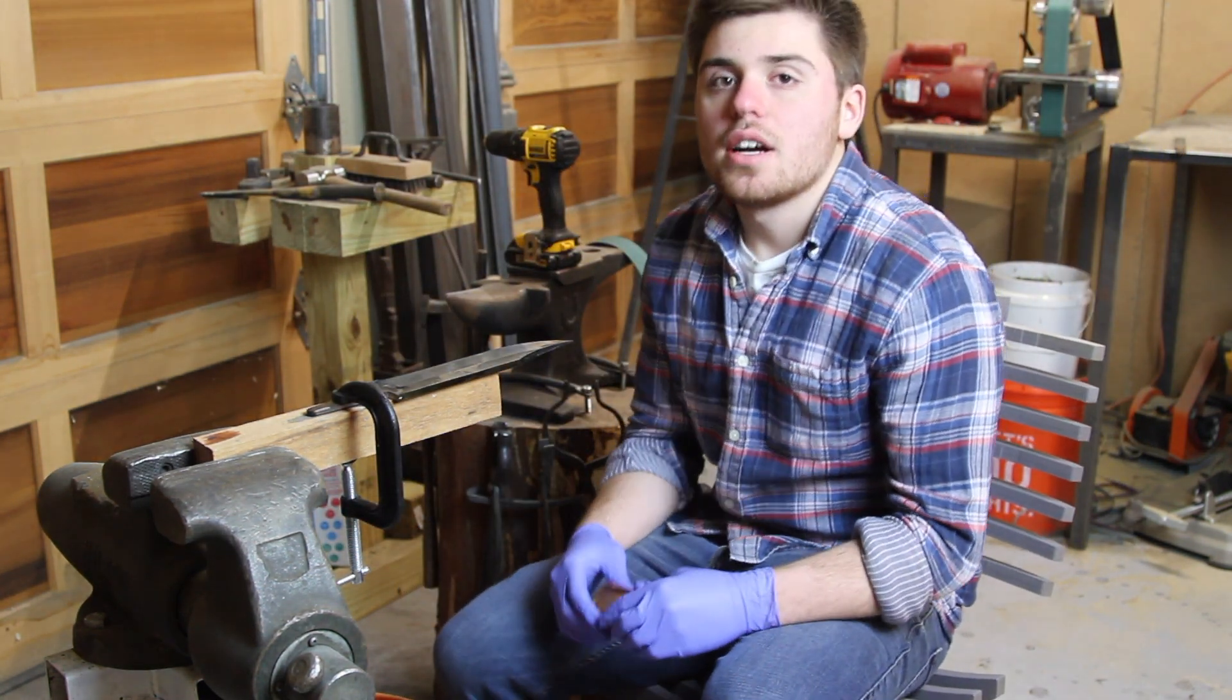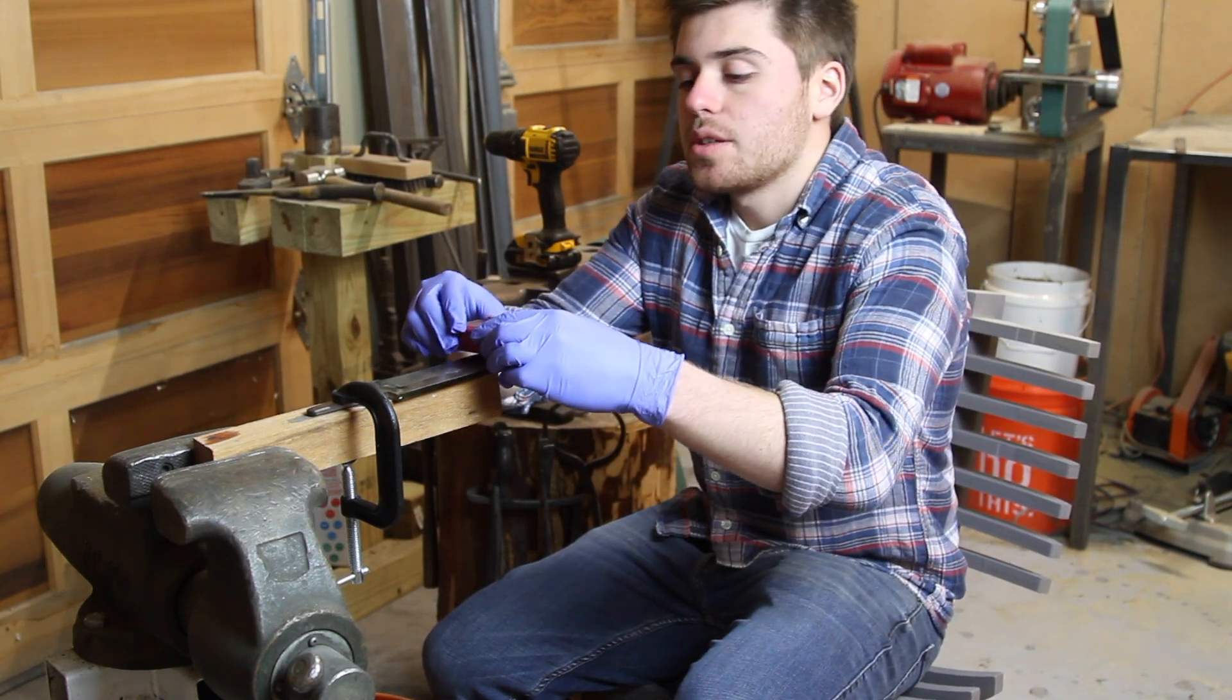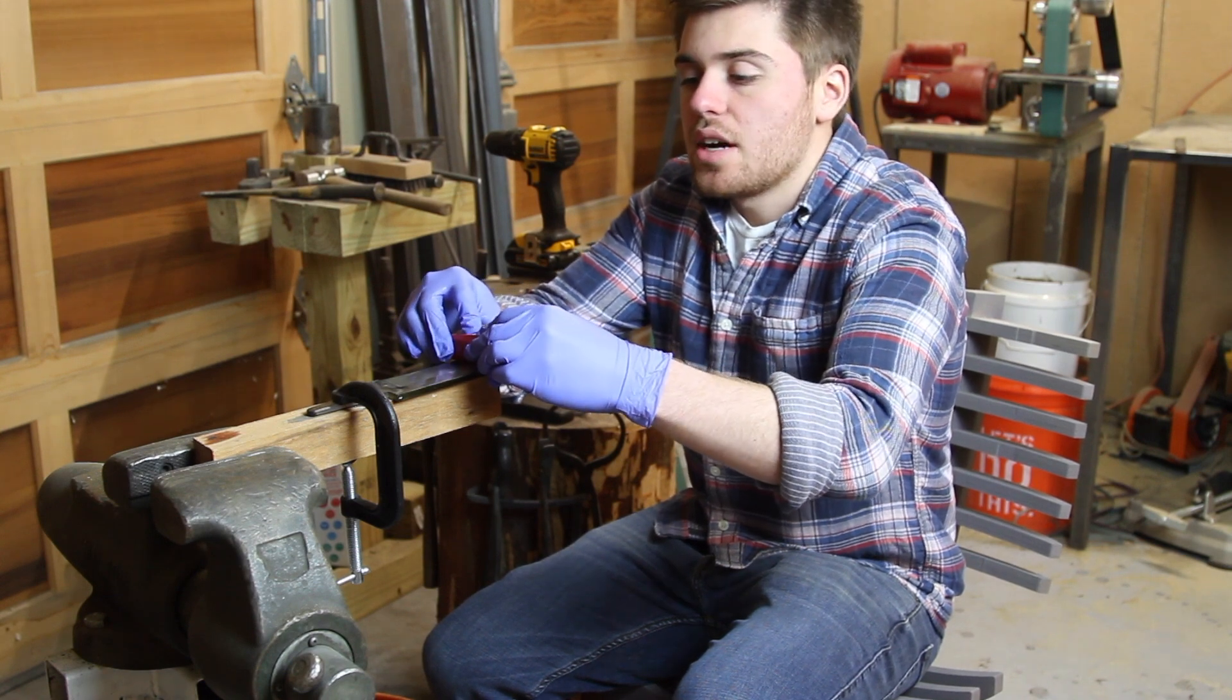Alright, so the knife is ground and now all I have to do is sand the blade. I'm going to start with 100 grit sandpaper and then work my way up to somewhere around maybe 1000 grit.